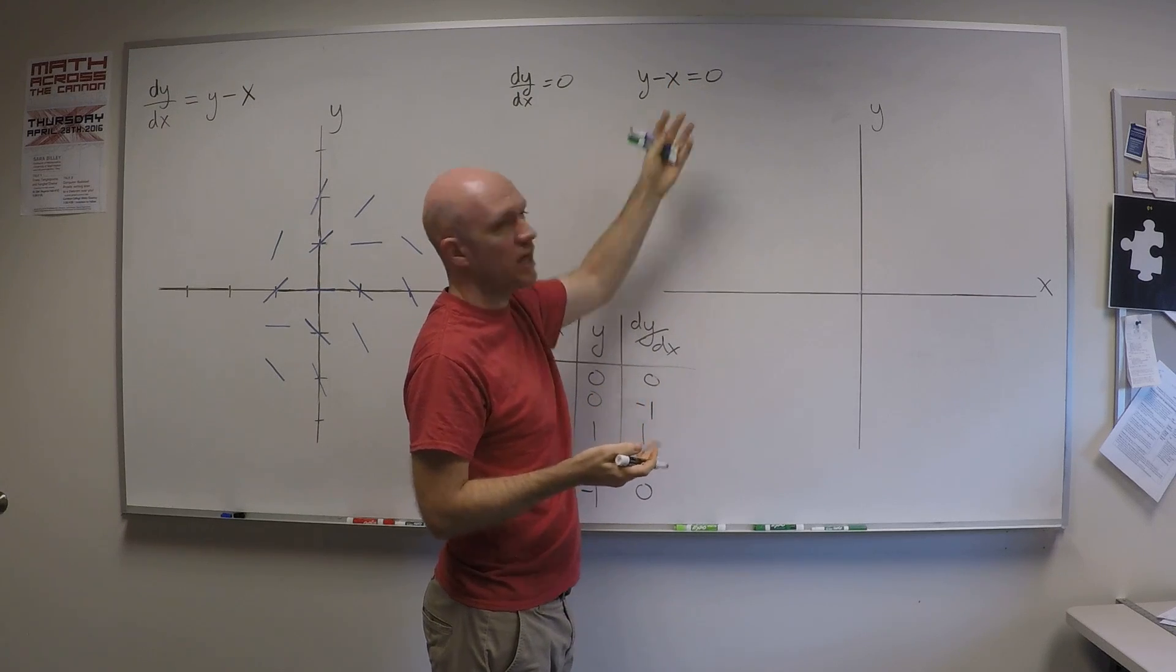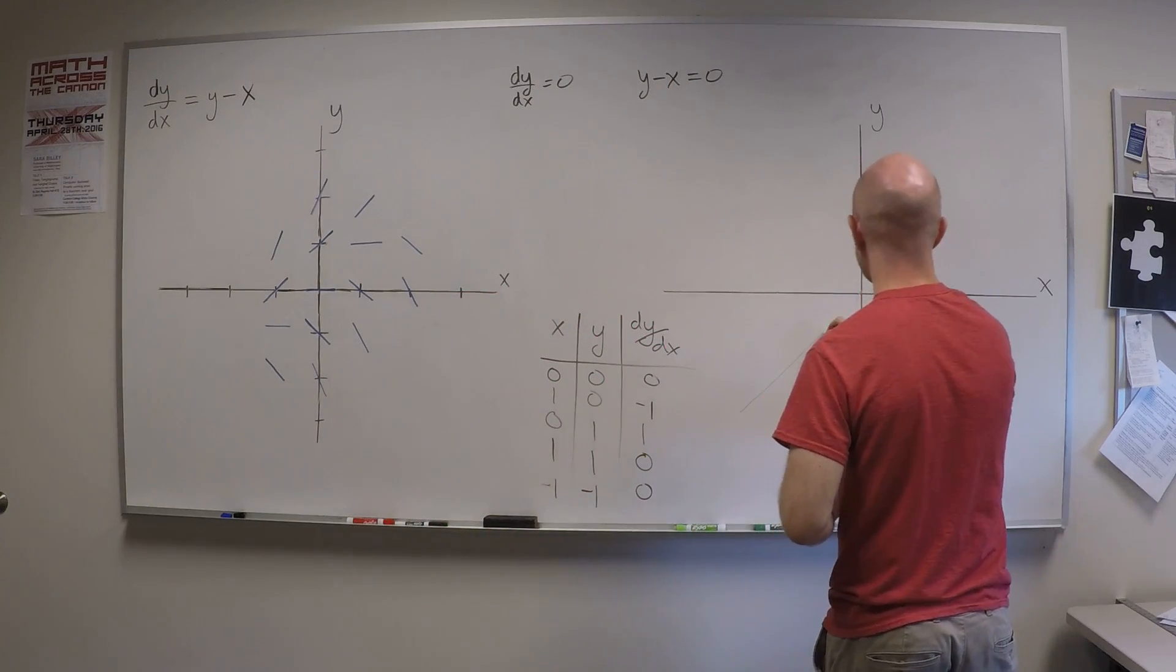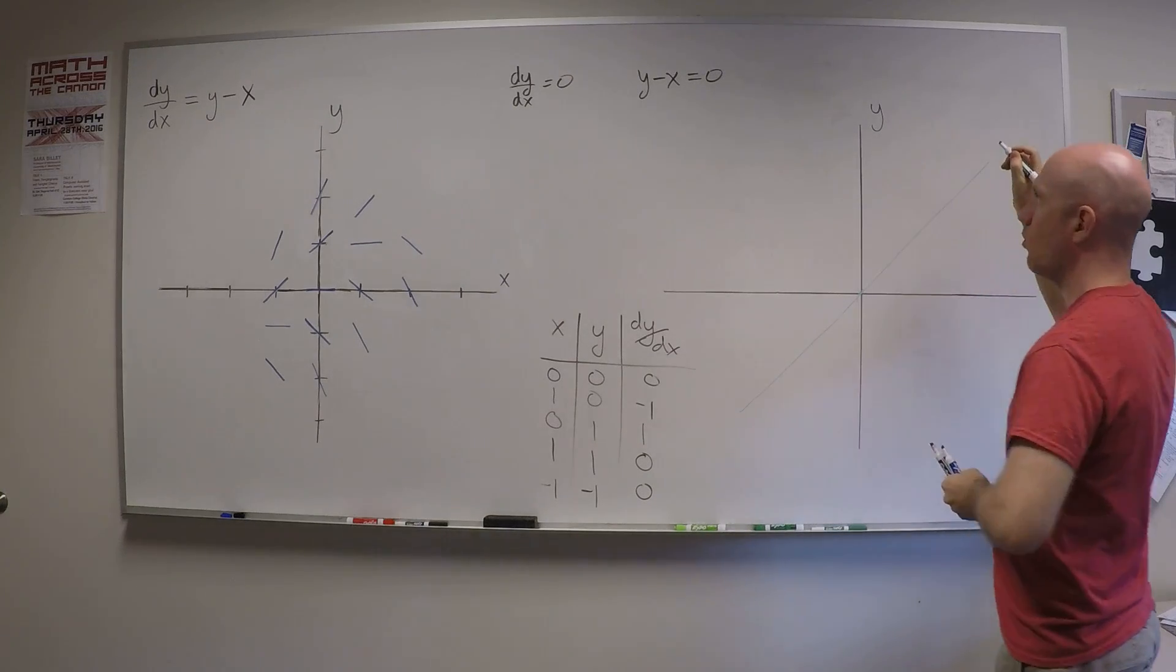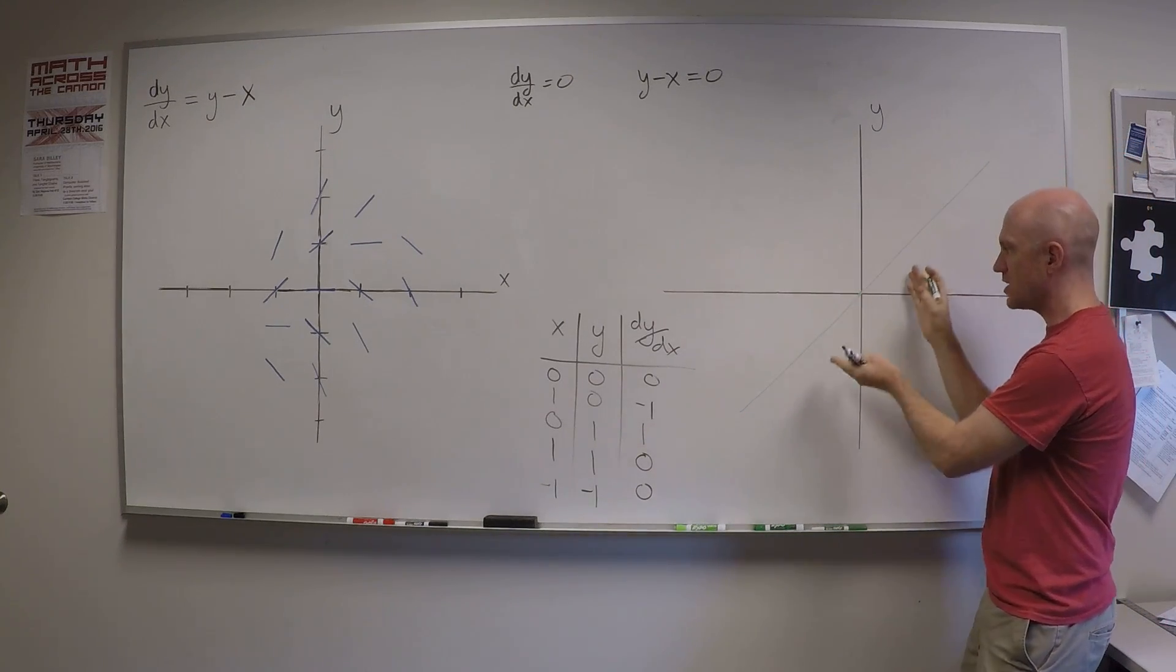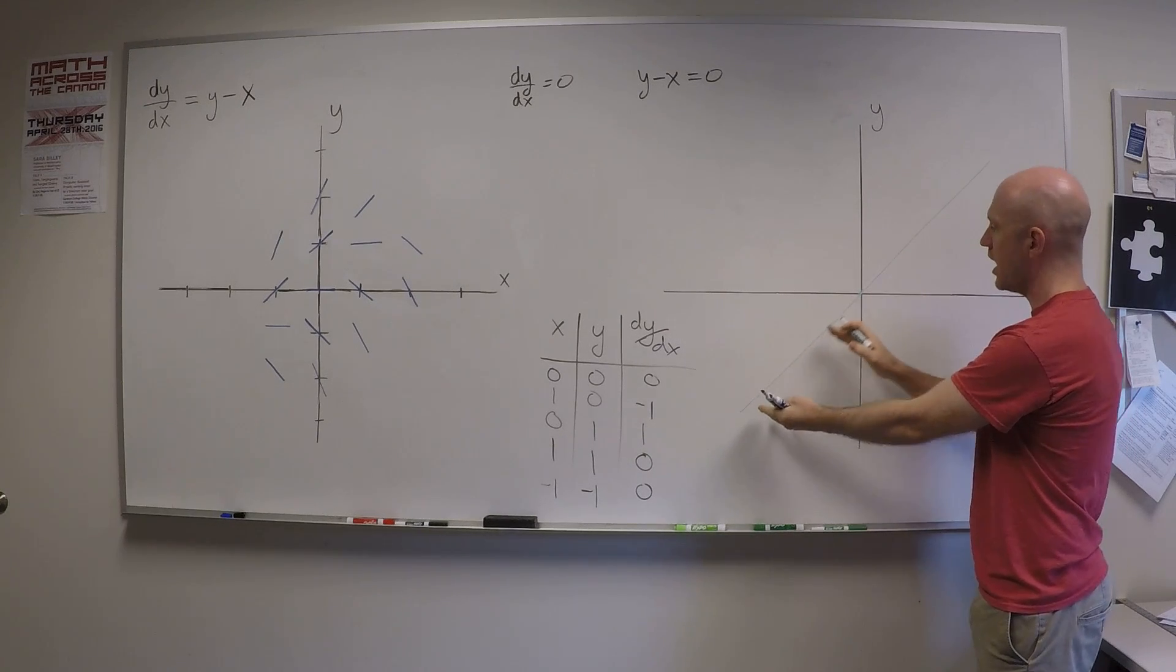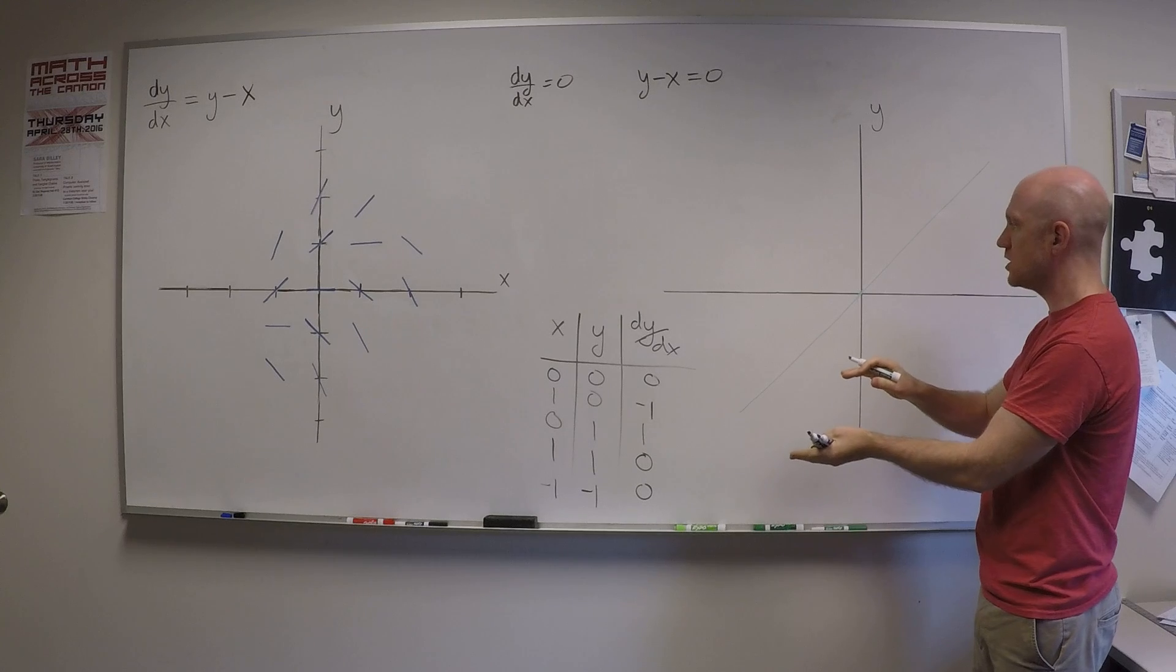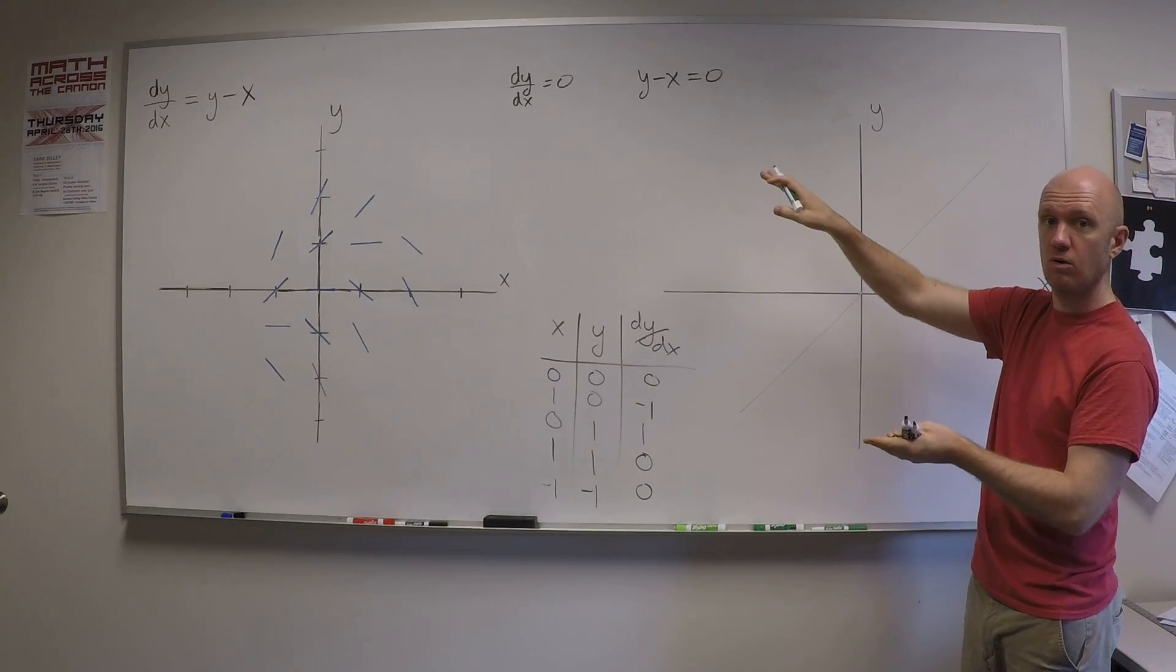That's the line y equals x. And so it's just this nice straight line through the origin. There it is. y equals x. Now, I should just note that this is not a solution necessarily to the differential equation. It's a line along which solutions to the differential equation, when they pass through this line, they must have slope 0.